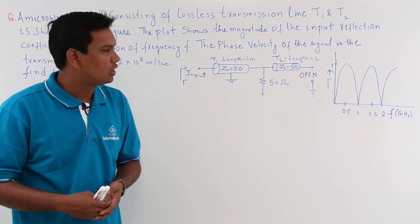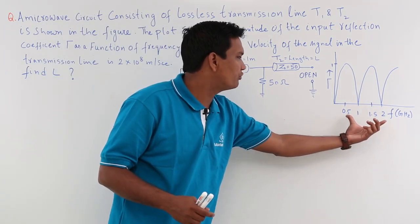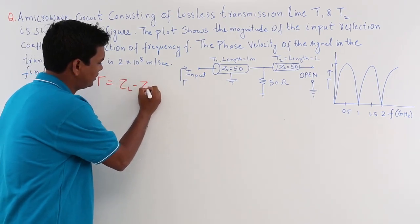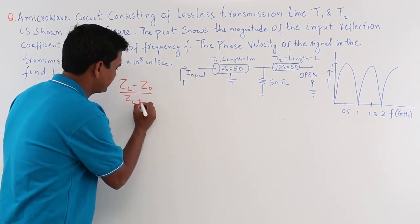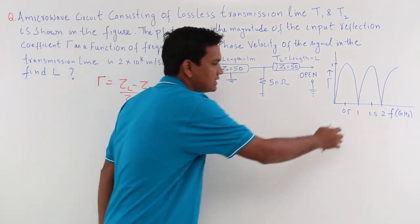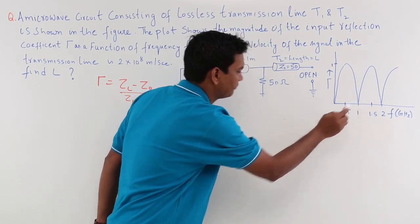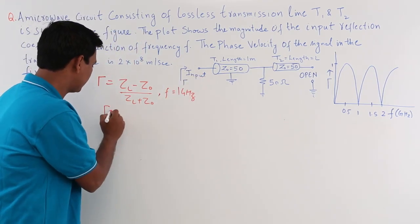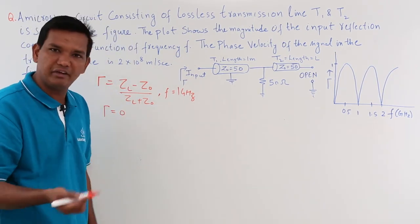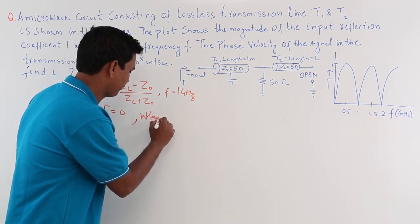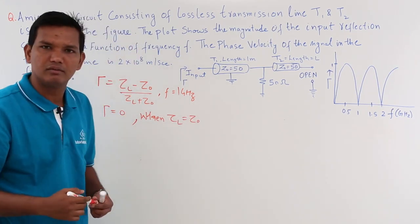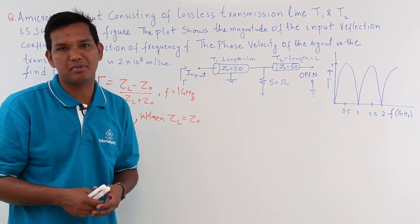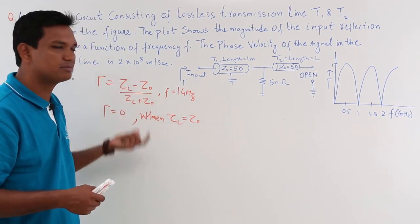The input reflection coefficient graph is already given. We know that tau equals (Z_L − Z₀) / (Z_L + Z₀). At F = 1 gigahertz, tau is 0, meaning there is no reflection. This is only possible when Z_L equals Z₀, i.e., matched impedance.